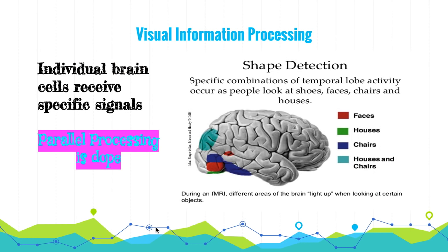Now let's look at visual information processing — how our brain takes signals from the eye and changes them into usable information. The first important thing is feature detectors: specific nerve cells in the brain respond to specific features of the stimulus, such as shape, angle, and movement. For example, looking at different objects causes different parts of the brain to light up. Parallel processing is also one of the coolest concepts here — when you read a sentence, your brain looks at the color, the shape, and the meaning of the words all at once.